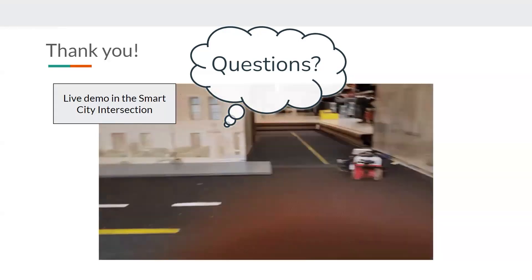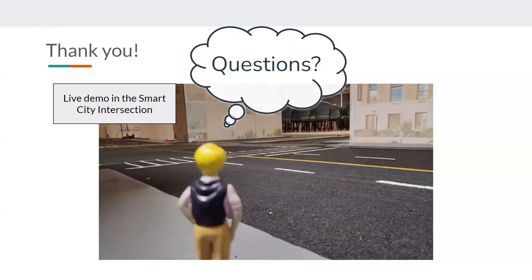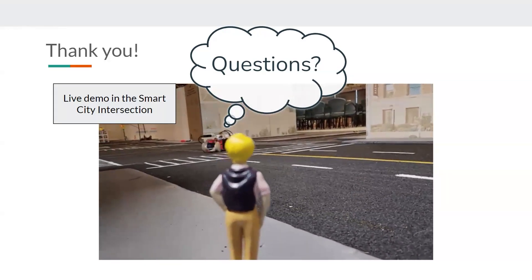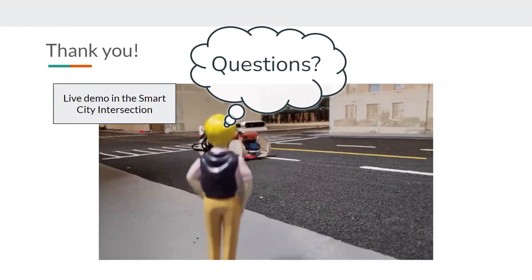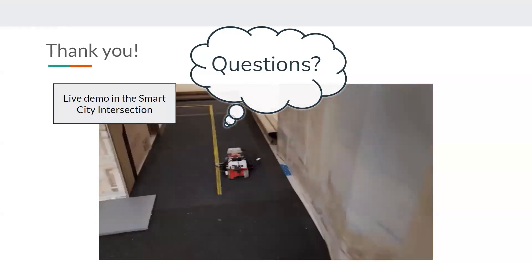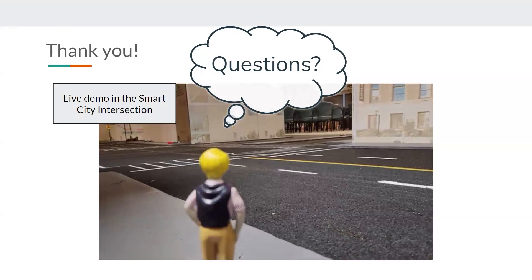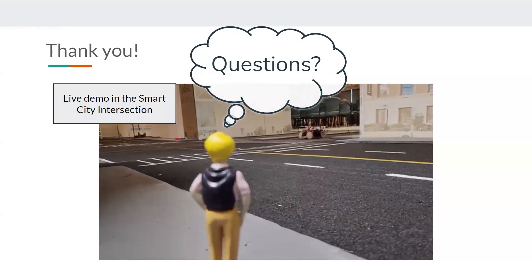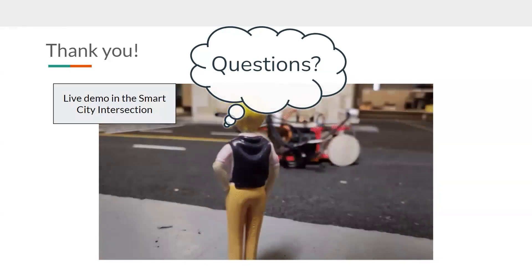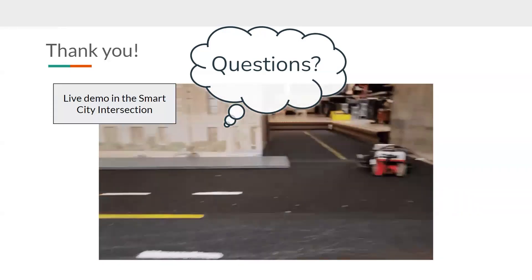The question was where do you store and process the data, on the car or somewhere like in a command center? So we record the data from the cameras and then we process that. And then we send it to a server here where we actually do all the training. And once we have our actual model, we put that on the car and then let that run while it's driving.